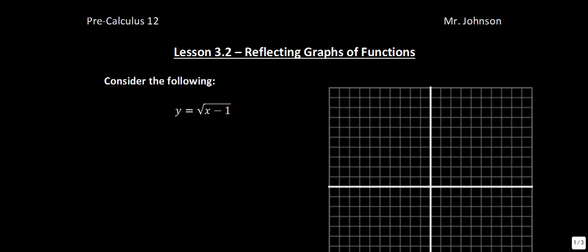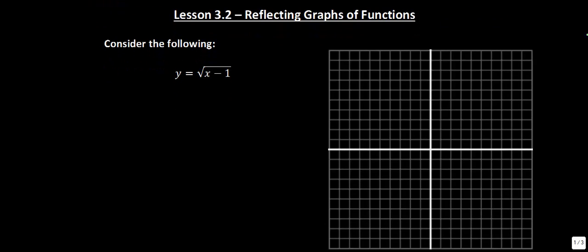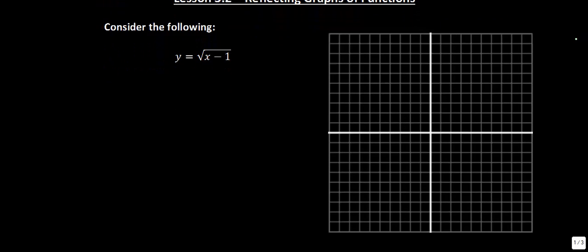So if we take a look at the function y is equal to the square root of x minus 1, this function shouldn't be too foreign to us. This is going to move the function 1 in the positive direction, so that is going to be where our function begins. And then from there, we go over 1 up 1, over 4 up 2, and over 9 up 3. So that would be the original function, and I'm just going to denote that with green.